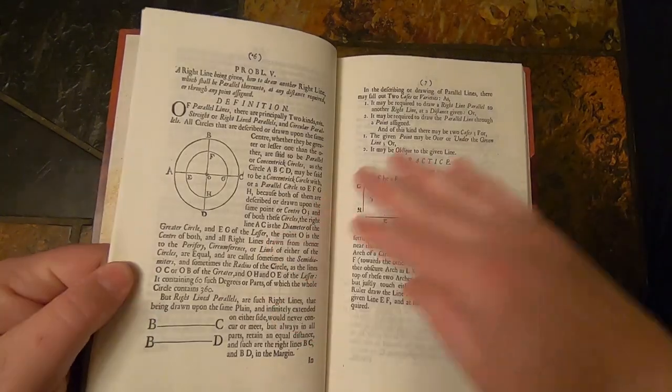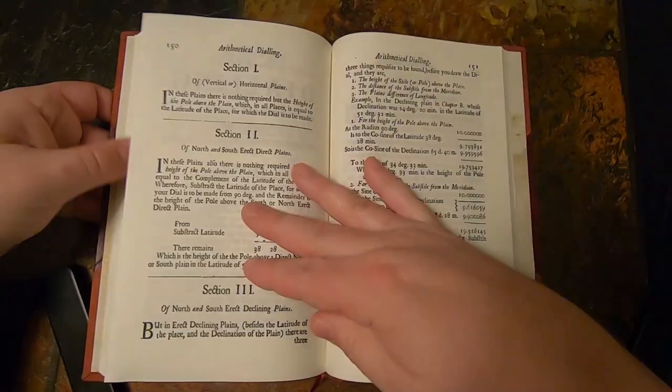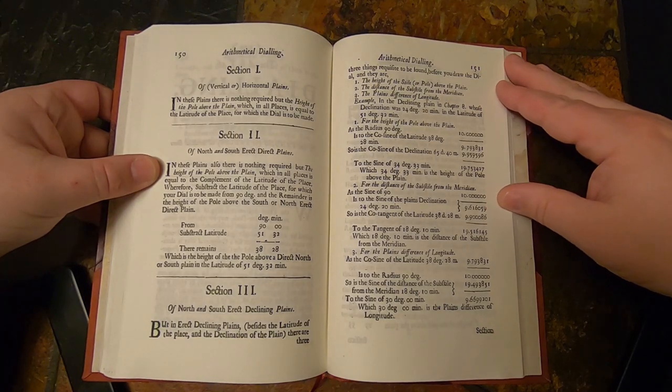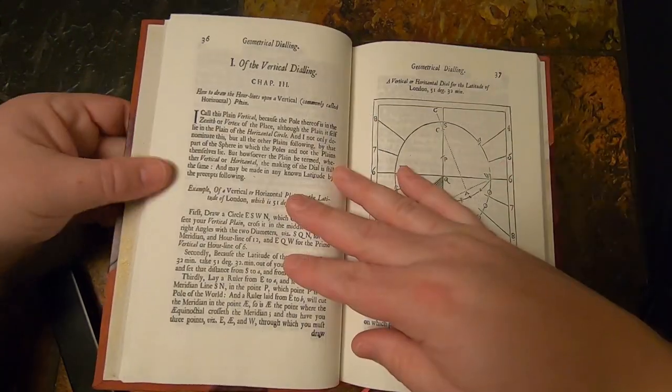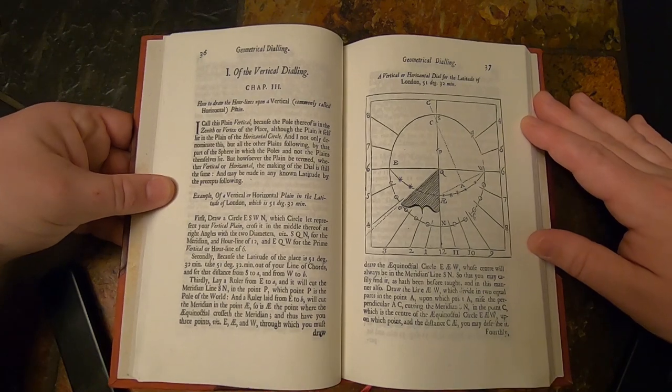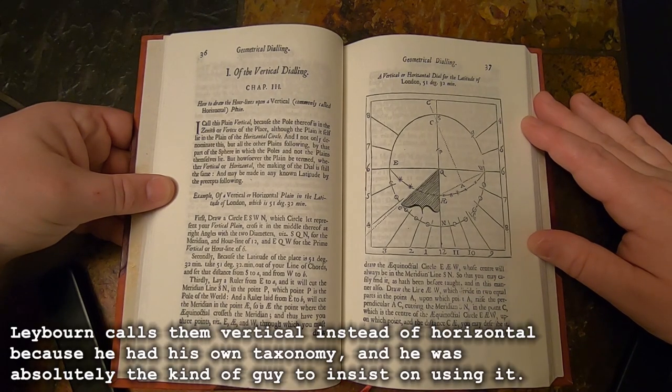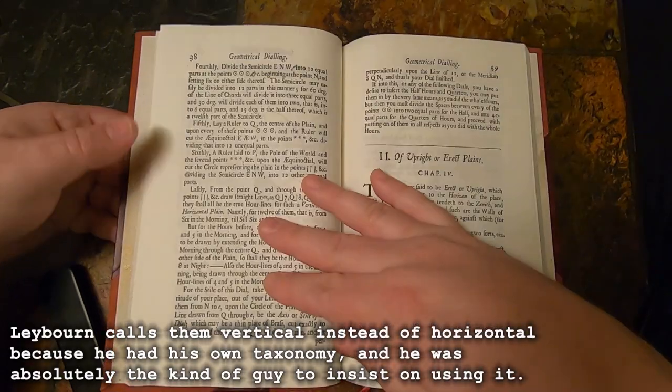At the very end of the book, it goes on to give the same constructions done in algebraic terms, using trig functions more as we would recognize them. When showing how to create a basic horizontal dial, Laybourne drafts the hour lines in a very different way than what we saw before.